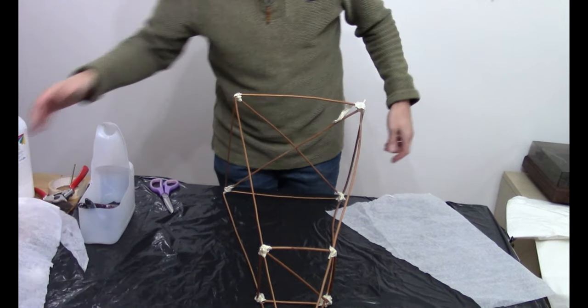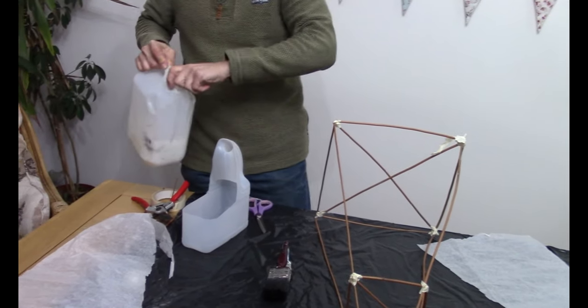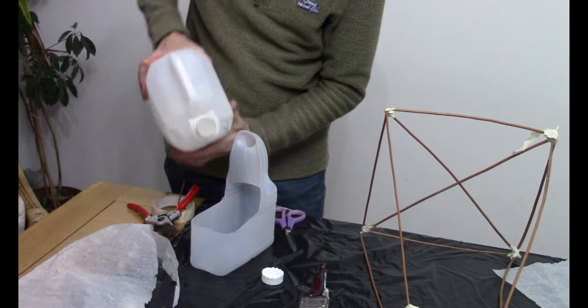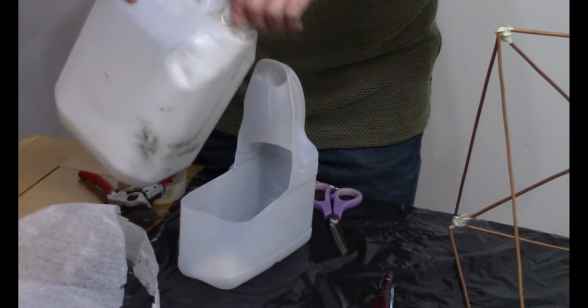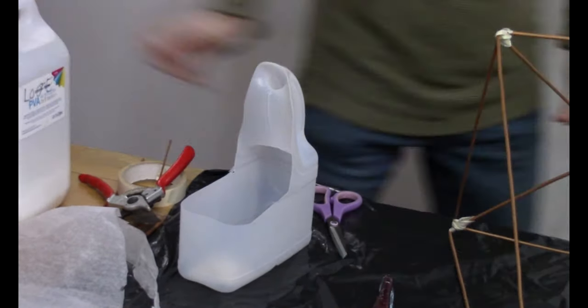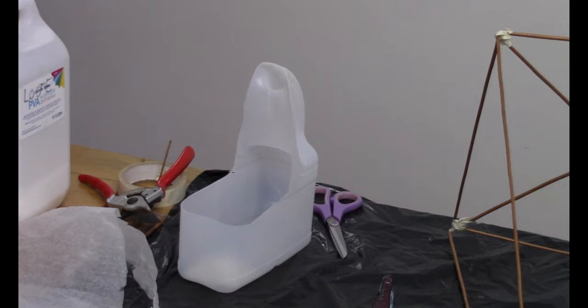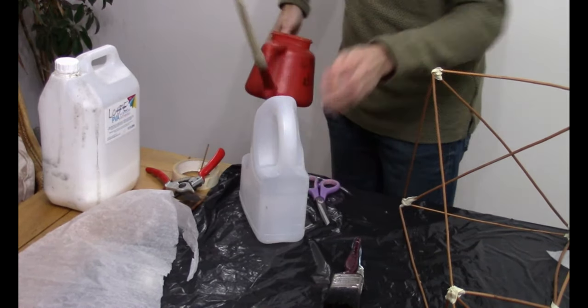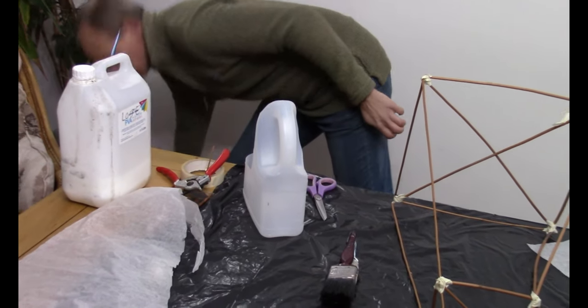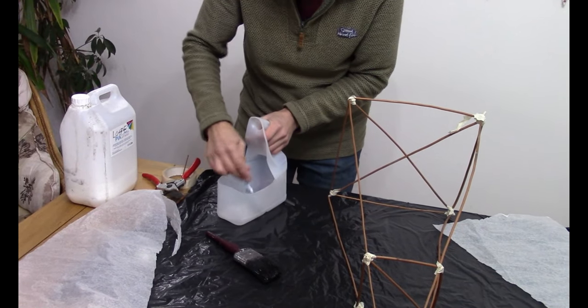Now I actually need to make up some PVA glue. So again, literally a dollop in here, and it's about 50-50, so it's about half PVA glue and half water. I'm just going to grab the water, which I almost prepared earlier. So I'll literally add half again of that.